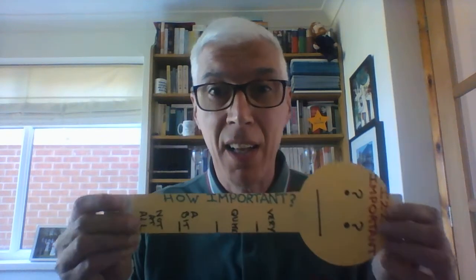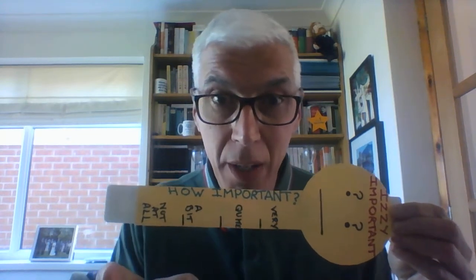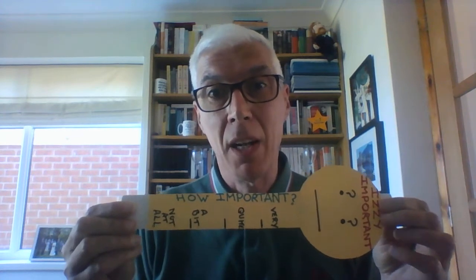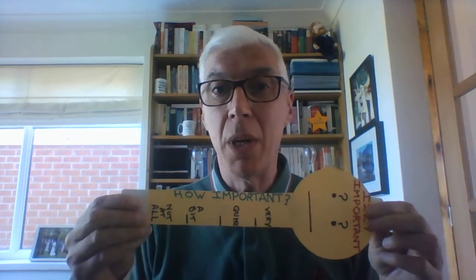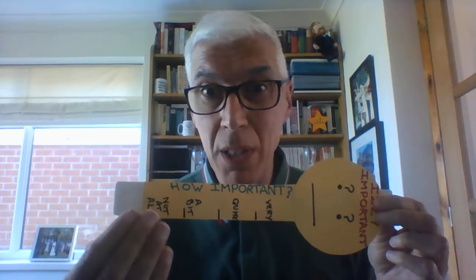So how important was germ theory and the work of Louis Pasteur? Where would you put it? How important was Robert Koch and his development of the new science he called bacteriology? Is Pasteur more significant than Jenner? Is Koch more significant than Pasteur — or are they all important? Have a think. Hope it's been useful — cheers, all the best, see you soon!